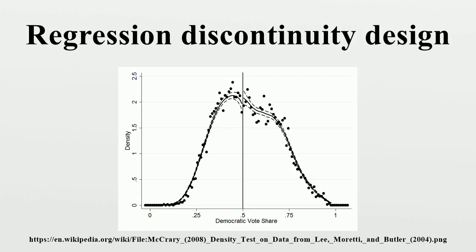If parameter estimates are sensitive to removing or adding covariates to the model, then this may cast doubt on the validity of the regression discontinuity design. A significant change may suggest that those who just barely got treatment differ in these covariates from those who just barely did not get treatment. Including covariates would remove some of this bias. If a large amount of bias is present and the covariates explain a significant amount of it, then their inclusion or exclusion would significantly change the parameter estimate.